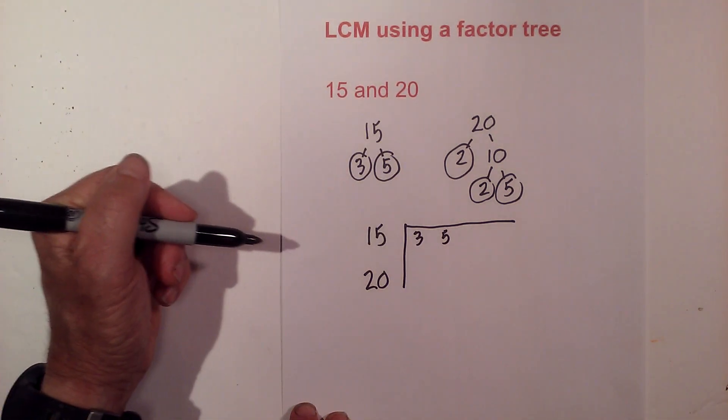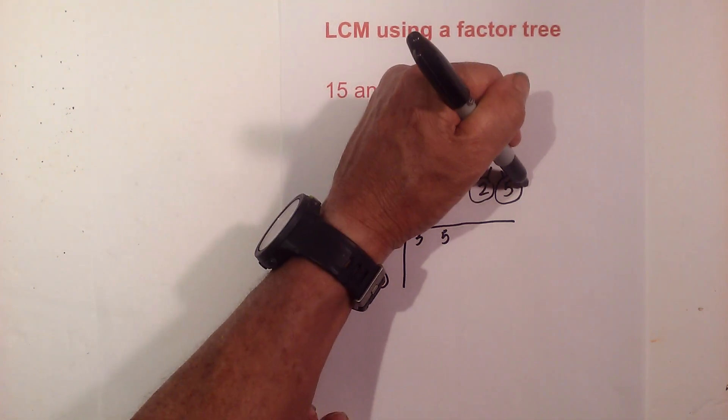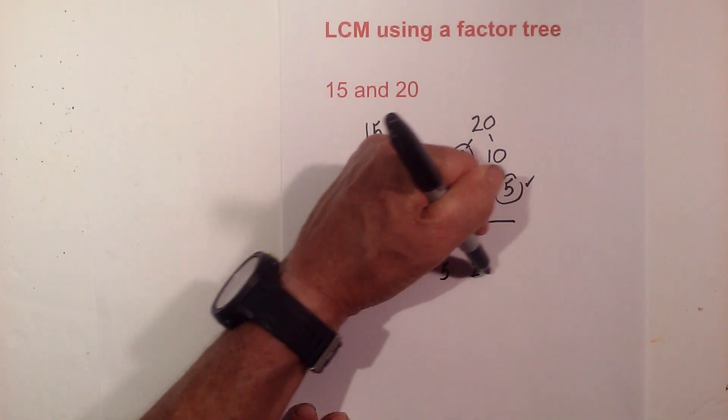And now I do the same for 20. I don't have a 3, and I have one 5, I'm gonna put a check there. So I'll write the 5 here and then I'll write a 2 and a 2 because I don't have a 3.